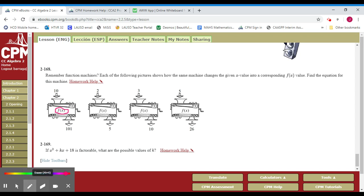It says remember function machines, each of the following shows how the same machine changes an x value into the corresponding function value. Find the equation for this machine. So what you guys are doing is telling me, well what is the equation for all these machines? Well they're all the same equation but we don't know what the equation is and that's actually what you guys are going to do.